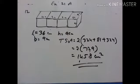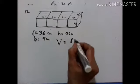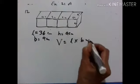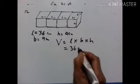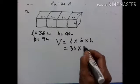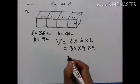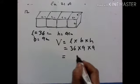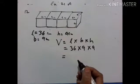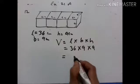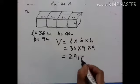Now let's find the volume. Volume is equal to length into breadth into height. Length is equal to 36 centimeter, breadth is equal to 9 centimeter, height is equal to 9 centimeter. 36 into 81 is equal to 2916 centimeter cube.